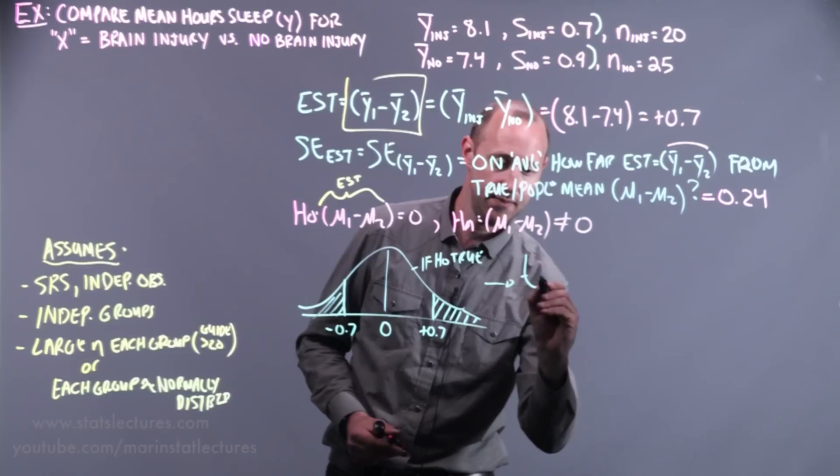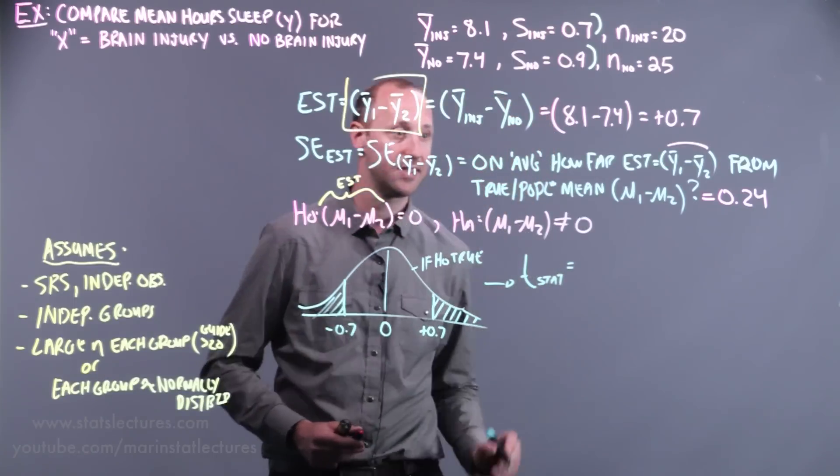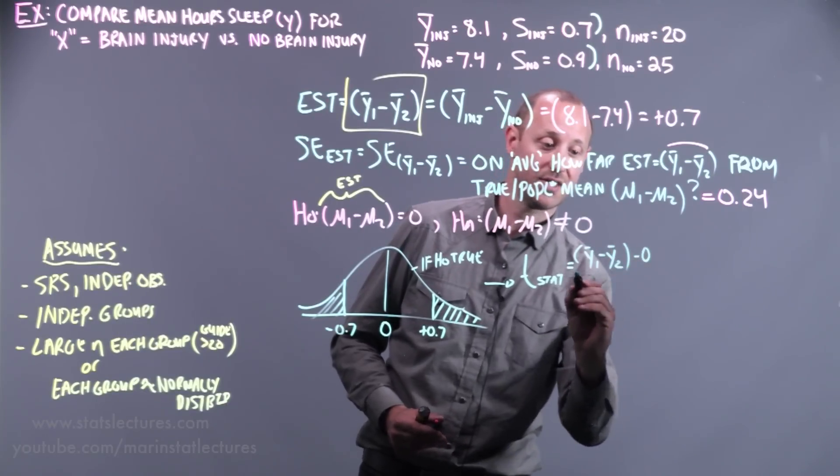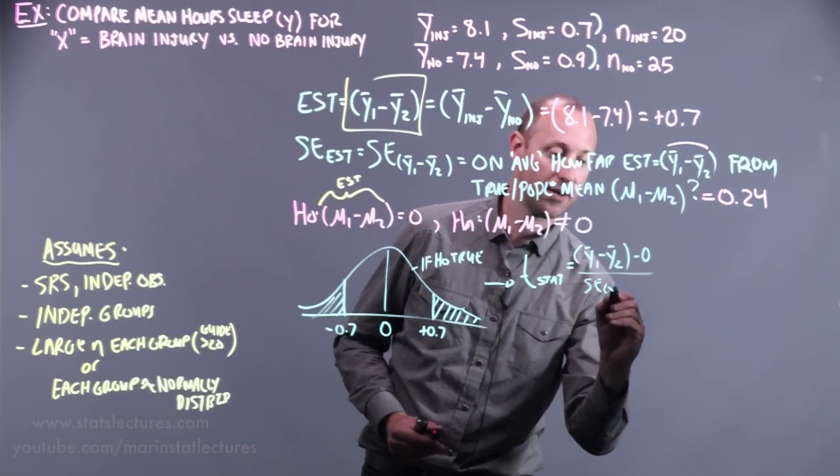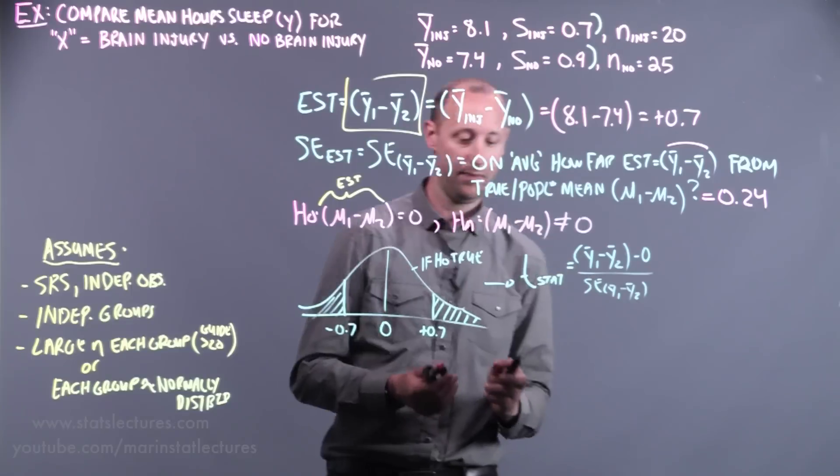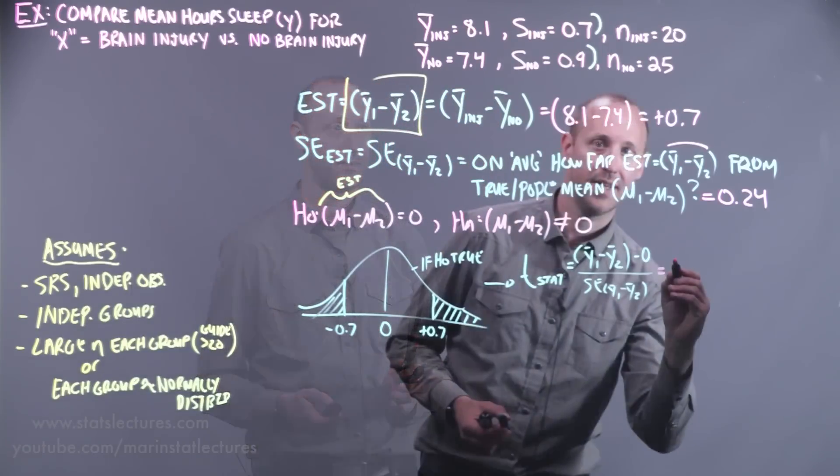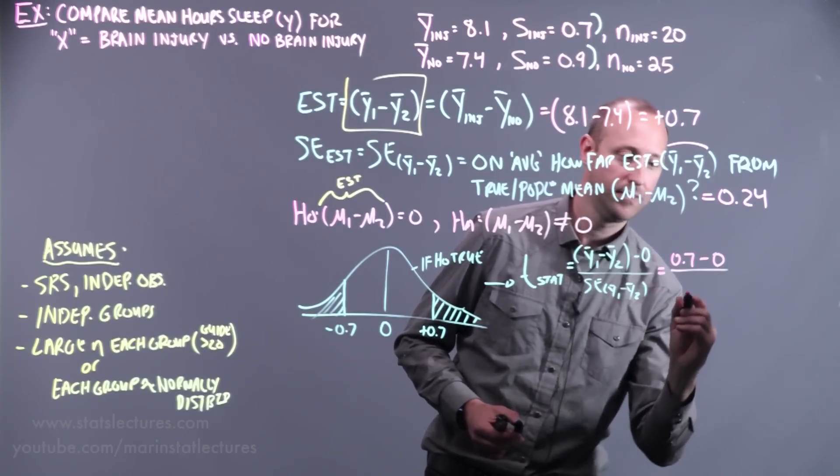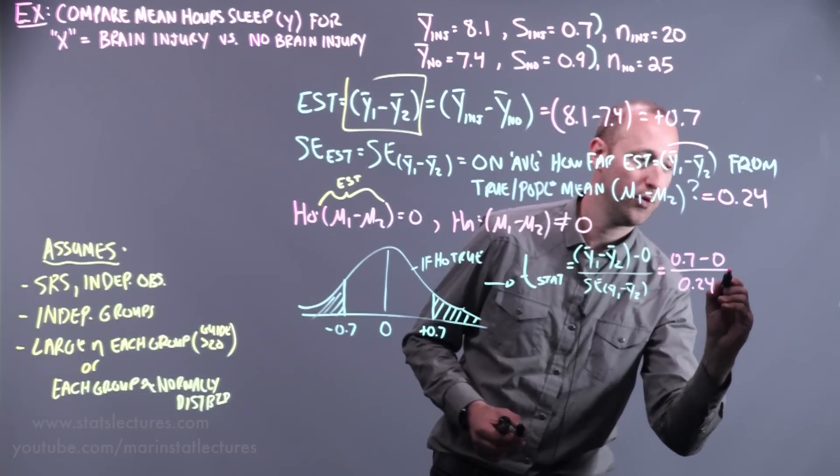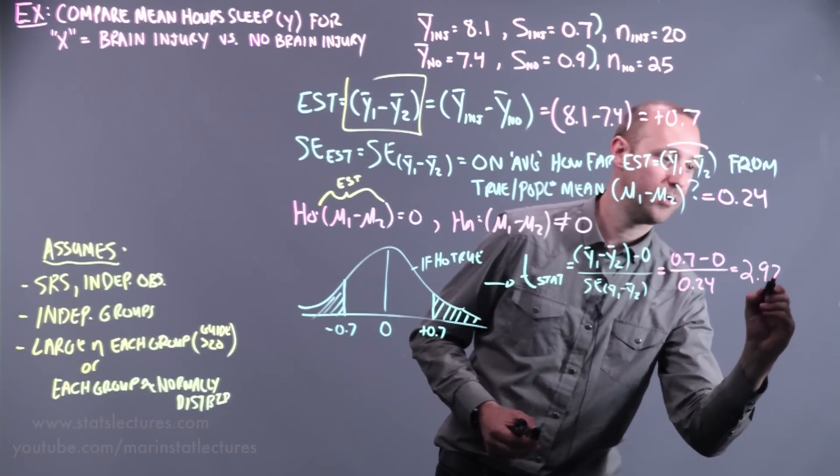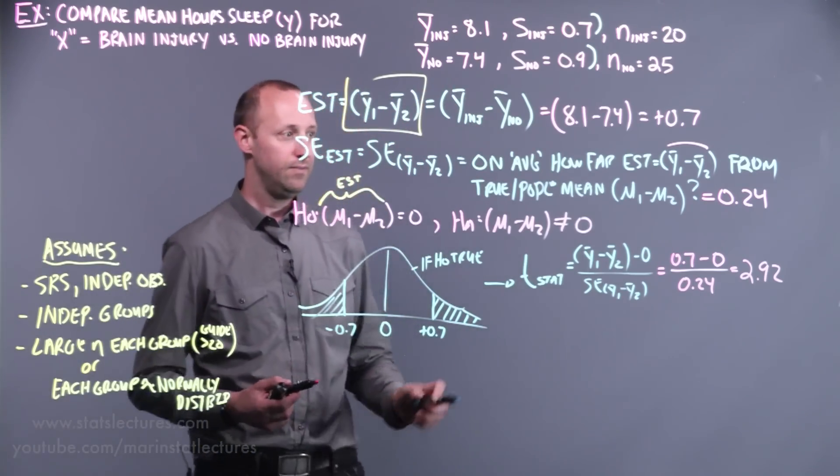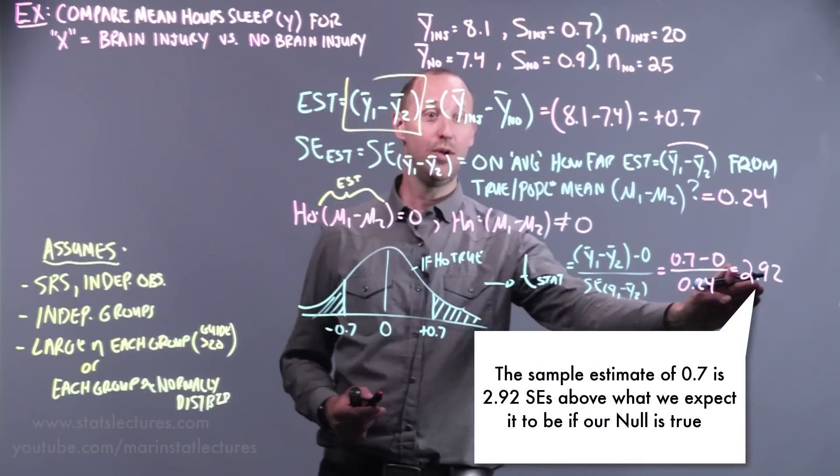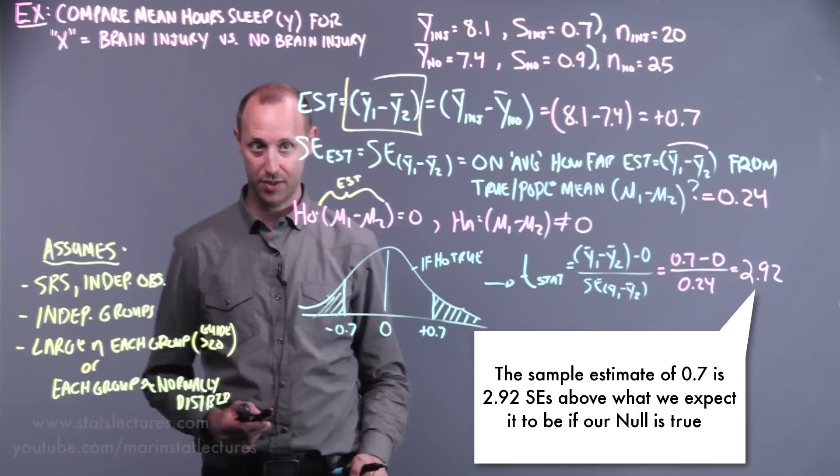Then we can standardize this, or calculate what we're calling test statistics. How far is the estimate we got from what we hypothesize it should be in terms of a standard error? If you work this out for our example, the estimate we got was 0.7. How far is that from zero? In terms of standard error of 0.24. This comes out to 2.92. The estimate that we got in our sample is about 2.9 standard errors above what we'd expect it should be if our null is true.